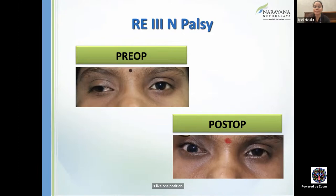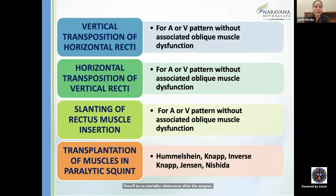Summary of transpositions: vertical transposition of horizontal recti, horizontal transposition of vertical recti, and slanting of recti muscles are used for all A and V patterns without associated oblique muscle dysfunction. For paralytic squints: Hummelsheim's, NAPS, inverse NAPS, Jensen's, and Nishita's procedures are available options.